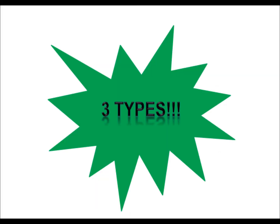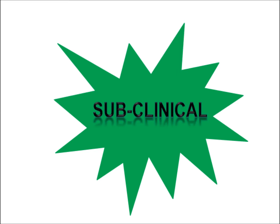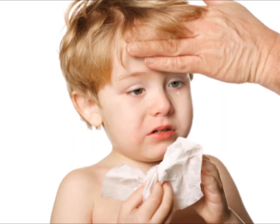There are three types of polio: subclinical, non-paralytic, and paralytic. Approximately 95% of all cases are subclinical. These patients may not experience any symptoms. This form of polio does not affect the central nervous system.